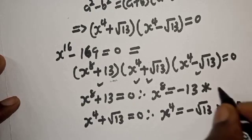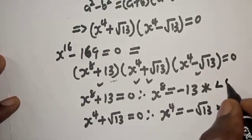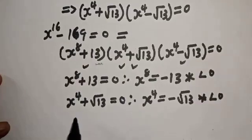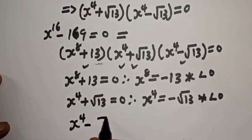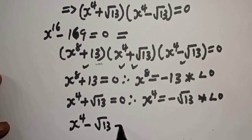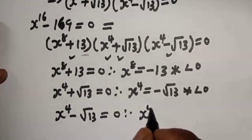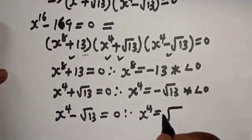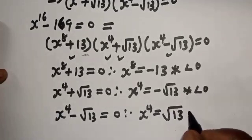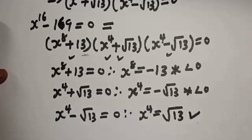From s raised to power 4 minus square root of 13 equals 0, we get s raised to power 4 equals square root of 13. This is the only valid real solution and we will work on this.